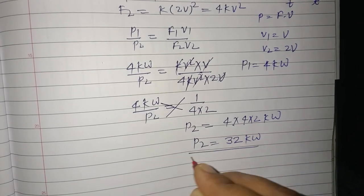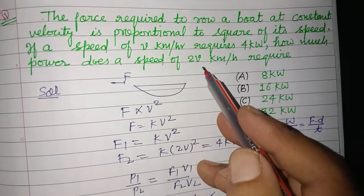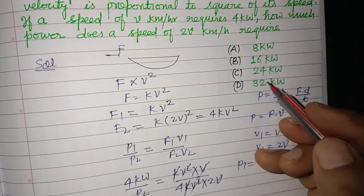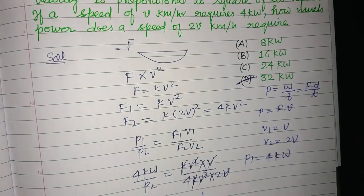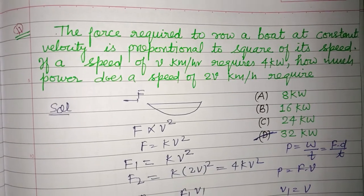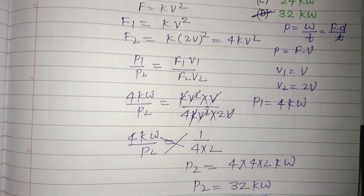32 kilowatts is the power required to move with speed 2V kilometers per hour. So this is the correct answer to this question. I hope you got it. Please like the video, subscribe to the channel. Thanks for watching.